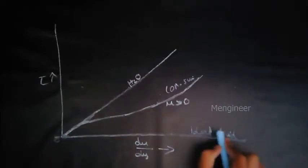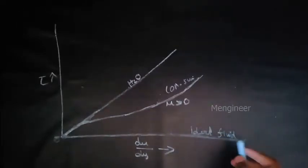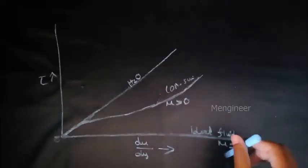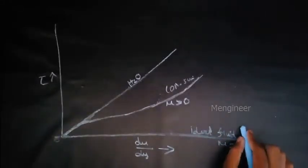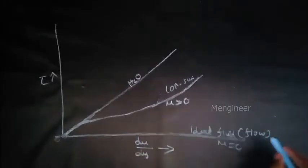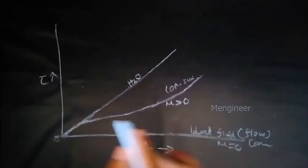So this is the hypothetical fluid. Mu equals 0. This fluid does not exist. That is the ideal fluid flow continuously. Flow continuously like this.